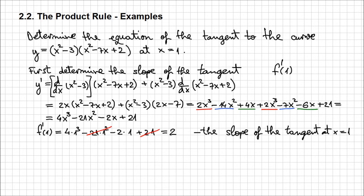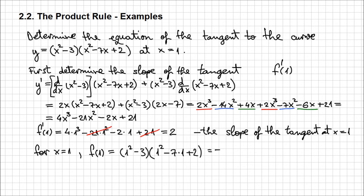In order to determine the equation, now that we have the slope at that point, we also need a point that belongs to this tangent. We have the x coordinate, so all we have to do for x equals 1 is to determine f of 1. I'm going to plug the value 1 into the expression of f of x: 1 squared minus 3, times 1 squared minus 7 times 1 plus 2. This gives minus 2 times minus 4, which ends up being equal to 8.